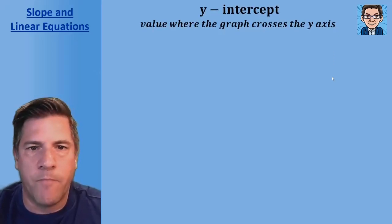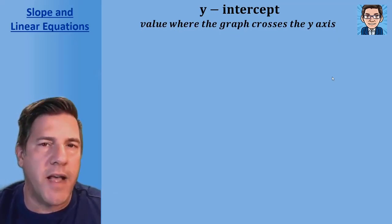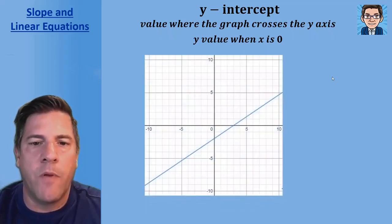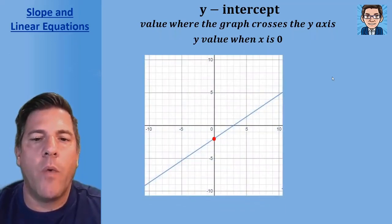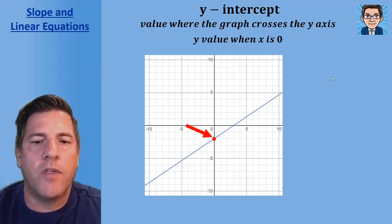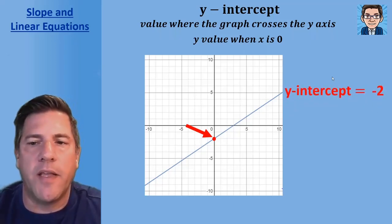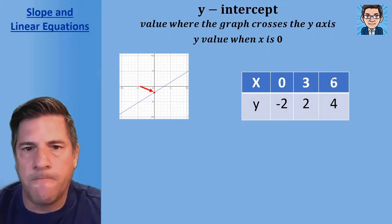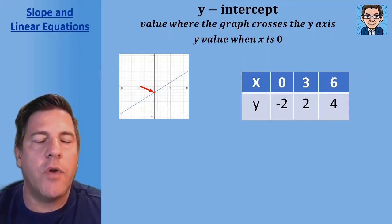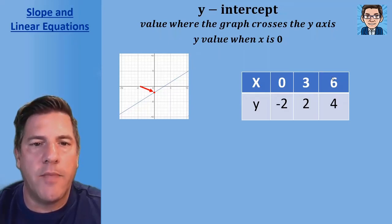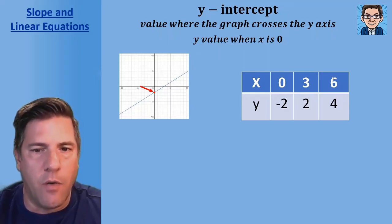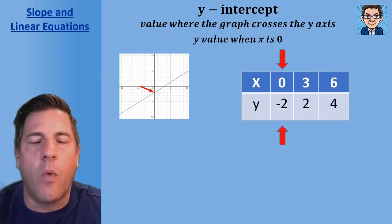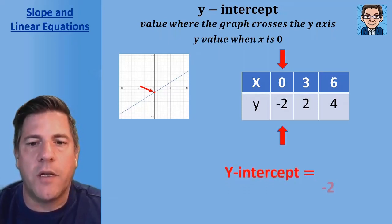The y-intercept is where the graph crosses the y-axis, and it's also the y value when x equals zero. On the graph, the line crosses the y-axis at negative two, so the y-intercept is negative two. In a table, we find where x equals zero and read off the y value — that's our y-intercept, which is also negative two.